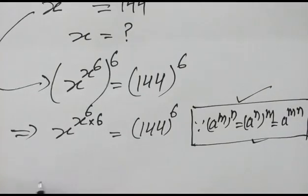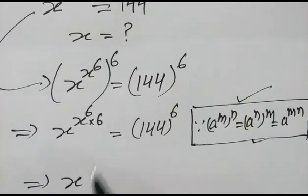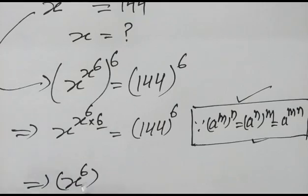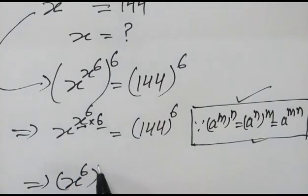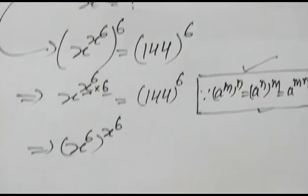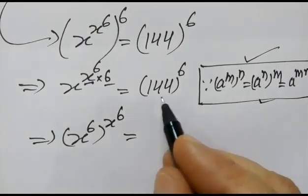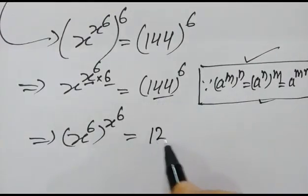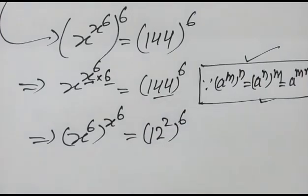We can write this as x to the power x to the power 6, all to the power 6, is equal to 144, which is 12 squared, to the power 6.